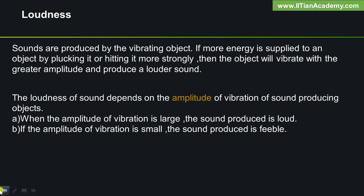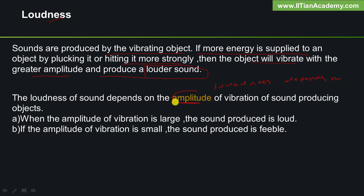Here we will learn about the characteristics of sound. Sounds are produced by vibrating objects. If more energy is supplied to an object by plucking it or hitting it more strongly, the object will vibrate with greater amplitude and produce a louder sound. The loudness of sound depends on the amplitude of vibration of sound-producing objects. When the amplitude of vibration is large, the sound produced is loud. If the amplitude of vibration is small, the sound produced is feeble.